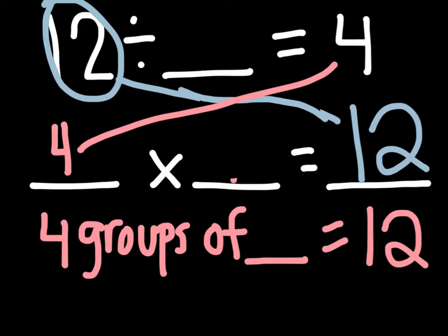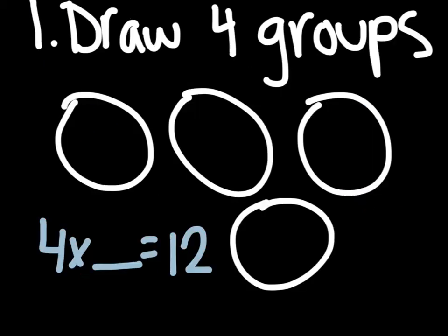Now that I've moved this into a multiplication problem, I can ask myself, 4 groups of blank equals 12. I know we say this all the time in multiplication, blank groups of blank equals blank. But now that's going to help me draw a picture. 4 groups of blank equals 12. Well, what I just said was 4 groups of, so that's what I do first. I draw 4 groups.